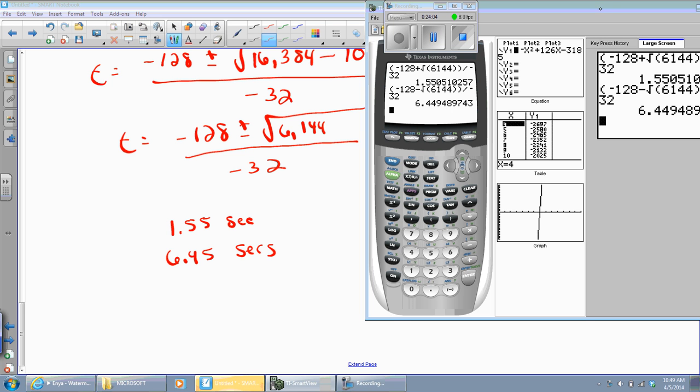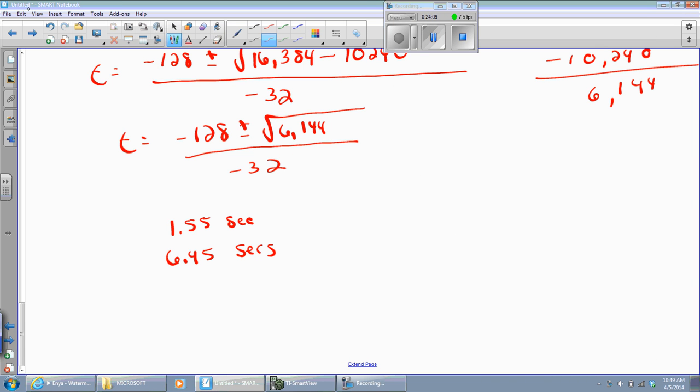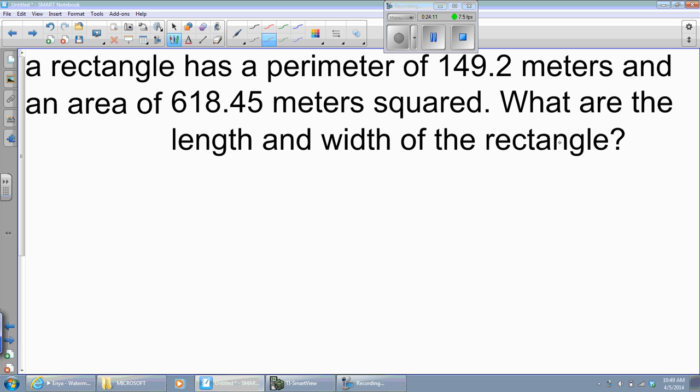At this point I'm ready to go to my calculator. Putting the numerator in parentheses, I'm going to put negative 128 plus the square root of 6,144, close the parentheses for the square root, close the numerator, divide by negative 32. And I get an answer of about 1.55 seconds. My other possibility is, make that a negative, and I get 6.45 seconds. So my two times occur at 1.55 seconds and 6.45 seconds.